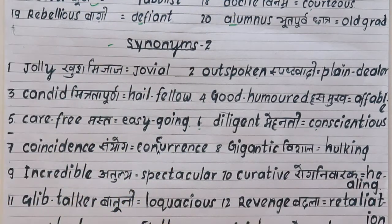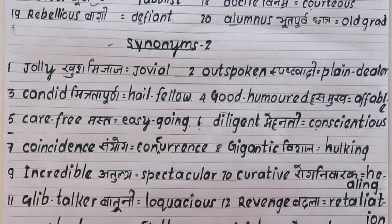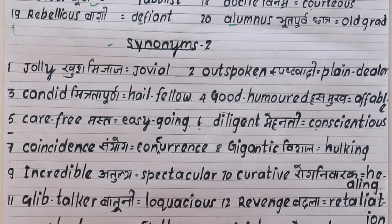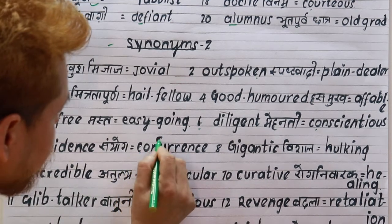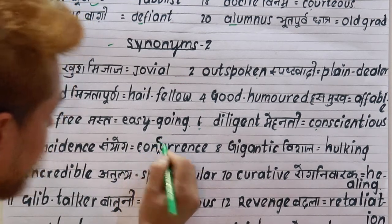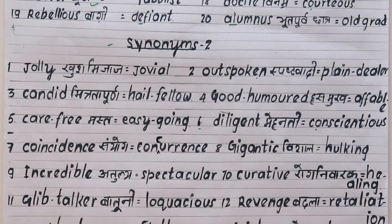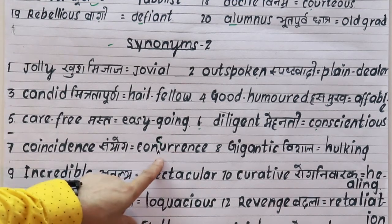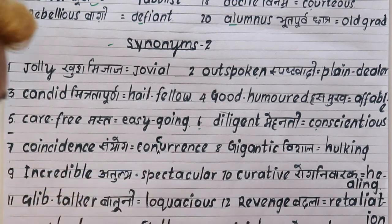Seventh is 'coincidence'. For example: what a coincidence! The synonym is 'concurrence', spelled C-O-N-C-U-R-R-E-N-C-E. What a concurrence! Eighth is 'gigantic', meaning very very big, large. The synonyms are 'enormous' and 'hulking'.